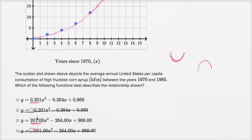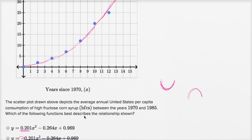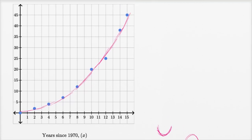And then when we look at the remaining two, we see there's a fairly dramatic difference in them. This is 201 versus 0.201, 264 versus 0.264, 969 versus 0.969. And so we could really look at our curve right over here and get a sense of, and test some points.